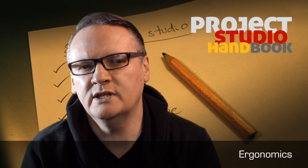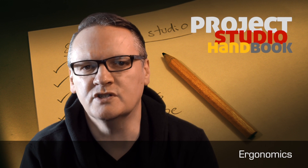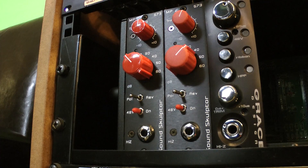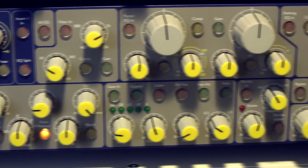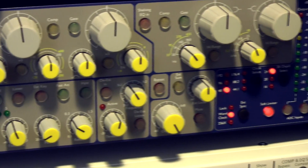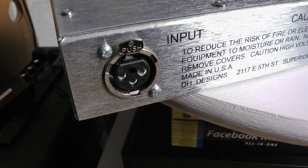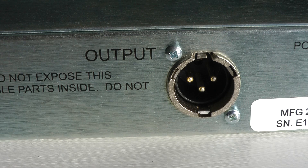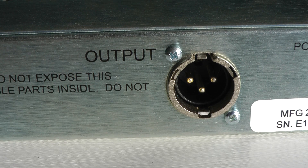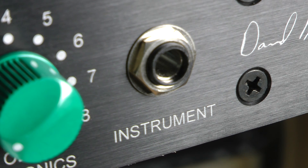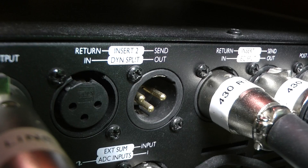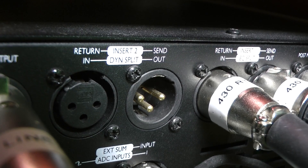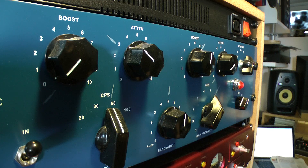The first thing we need to look at when choosing a mic pre are its features. Some mic pres are minimalist, whilst others are designed to accommodate a wide range of microphone types and recording setups. Here are the primary things to look at: a balanced XLR mic input, a balanced XLR line output, and a high-Z DI instrument input for connecting an electric guitar or bass guitar.